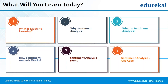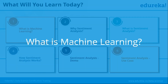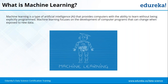Let's move to the first topic: what is machine learning? Machine learning is basically a way of providing computers the ability to learn without explicit human intervention, so that they can learn themselves. We develop programs that can change themselves when they encounter new data without human help.